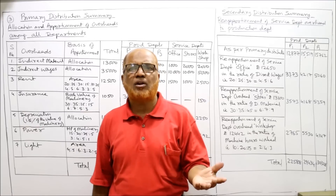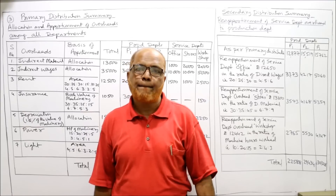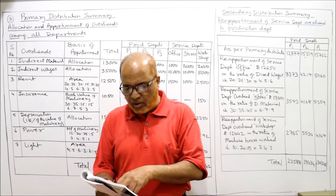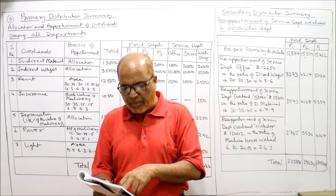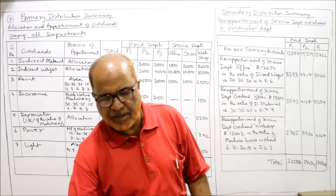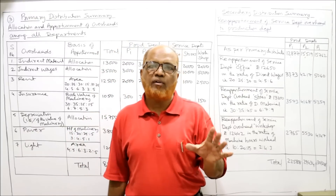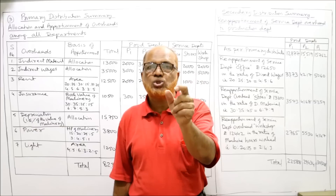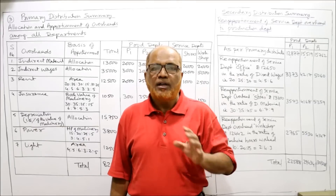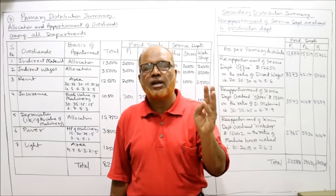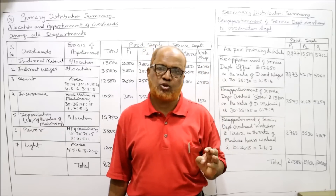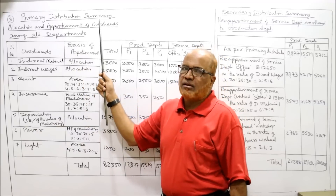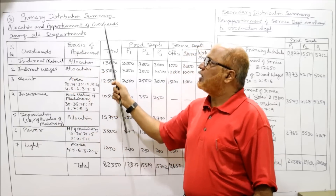Light: if lighting points are given we use them, but they are not given here, so we use area as the alternative. Light will be distributed on the basis of area. You are required to prepare the overhead analysis sheet for the departments showing clearly the basis of apportionment. Since service department names are given — Office, Stores, Workshop — we must make both primary and secondary distribution.